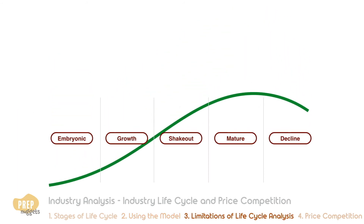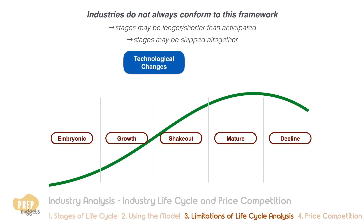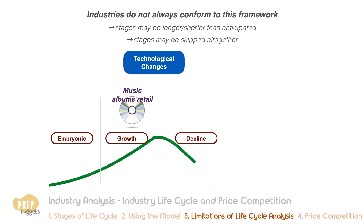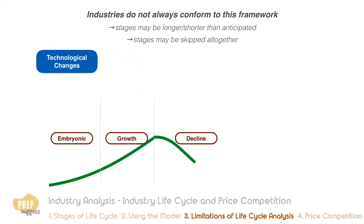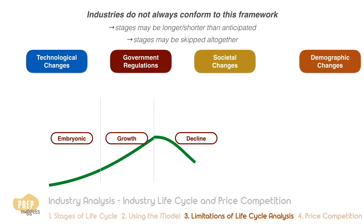Although life cycle analysis is a useful tool, industries do not always conform to its framework. Life cycle stages may be longer or shorter than anticipated, or they may be skipped altogether, due to technological disruptions. For example, the music album retail industry went abruptly from the growth stage to the decline stage when consumers gained access to download or stream music through the internet. Other disruptive factors include changes in government regulation, changes in society, and changes in population demographics.